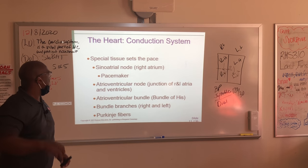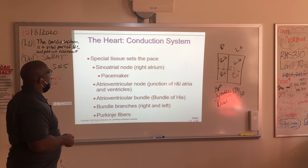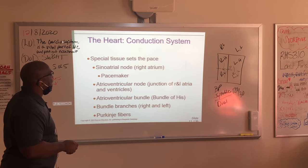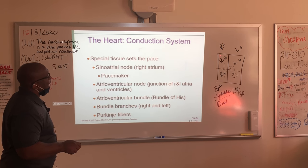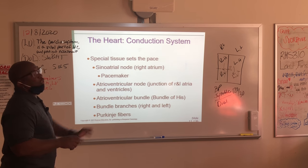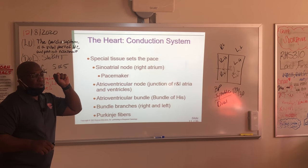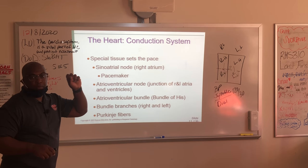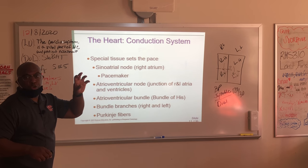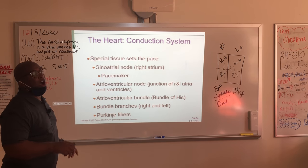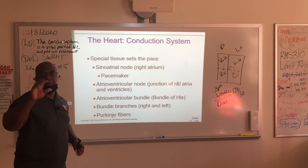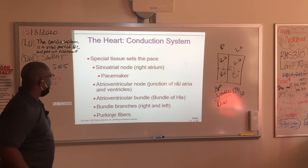The AV node, or atrioventricular node, is at the junction of the right and left atria and the ventricles. You have the SA node here and the AV node here. Those electrical impulses send out a signal from the SA node for your atria and ventricles to contract. All of this works in a rhythm.